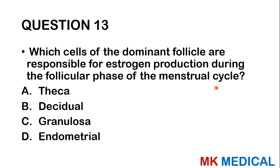Question thirteen: Which cells of the dominant follicle are responsible for estrogen production during the follicular phase of the menstrual cycle? A, the theca cells; B, the decidual cells; C, the granulosa cells; D, the endometrial cells. The granulosa cells are the ones responsible for production of estrogen.